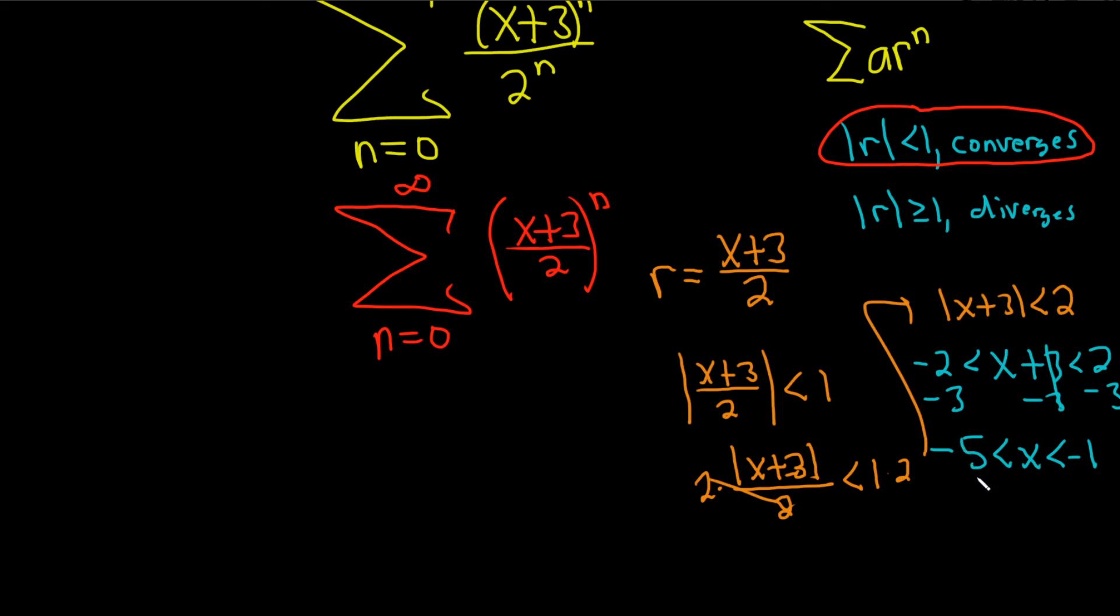We can write it in interval notation, and if we do, we should use parentheses, because we have strict inequalities. So this is (-5, -1), just like that, to be the set of all x for which the series converges. This is actually called the interval of convergence.